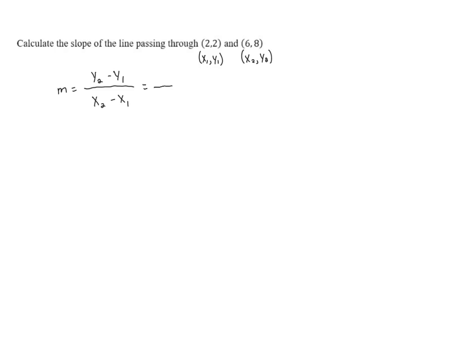So if we start to substitute in the values that we have, we start with y2. That's going to be the y-coordinate of the second point, which in this case is 8. So we've got 8 minus y1. Now, y1 is going to be the y-coordinate of the first point, which is 2. So we end up with 8 minus 2.